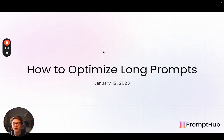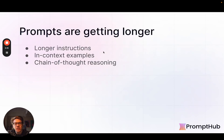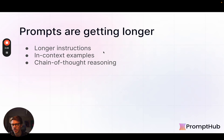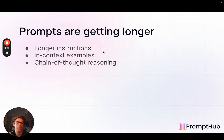Hey guys, Dan here, co-founder of Prompt Hub, back again to give you some of the latest research into prompt engineering. Today we're focusing on long prompts and how to optimize them. Year 2023 has revealed a lot of information about prompt engineering — best practices like more specific instructions, adding context, examples, or chain of thought reasoning, and new methods from tree of thoughts to algorithm of thoughts. They work well, but they lead to longer and longer prompts — we're talking thousand, two thousand, three thousand token prompts.